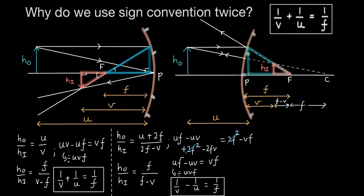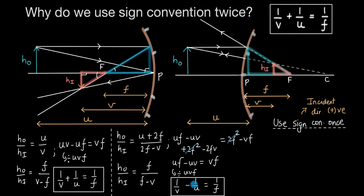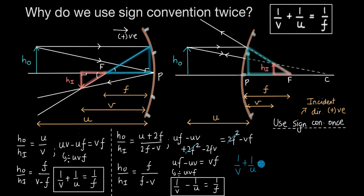We apply sign convention once, considering that the incident direction is positive. For the concave mirror case, the incident direction is to the right, so everything to the right of pole P is positive and everything to the left is negative. Here, the object, image, and focus are all on the left-hand side of P, so we write minus V, minus U, and minus F in their places. But all the negative signs cancel, and the equation we get is 1/V + 1/U = 1/F.